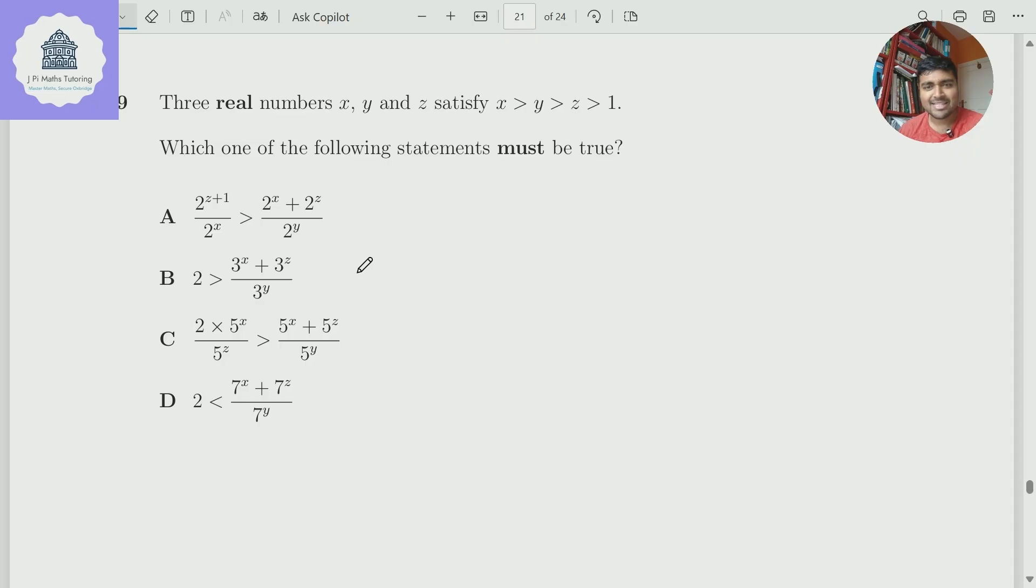So what is the mistake some students make? Well, let me actually explain how we're going to solve this first, and then I'll explain what students normally do incorrectly. So this question is, which of the following must be true? In maths, statements can either be true or false. There's no in-between. If a statement is true, then in theory we should be able to prove it.